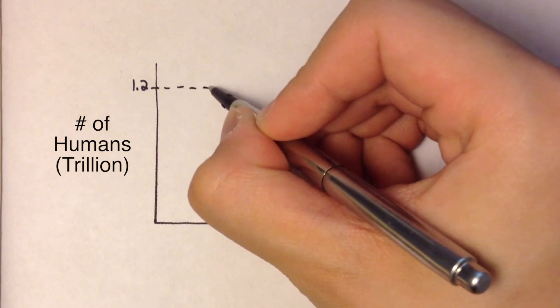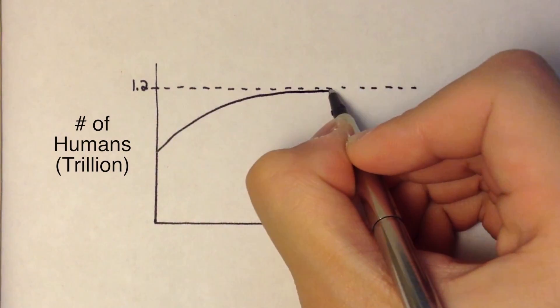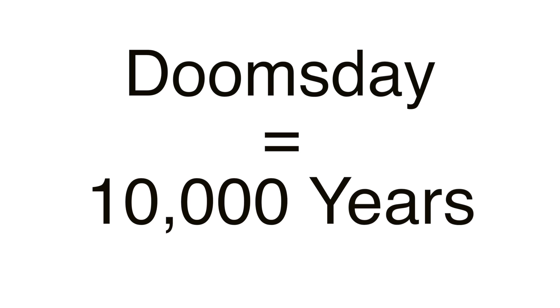Anyways, the main point is that 1.2 trillion humans is likely the maximum total number of humans that will ever exist. This is also saying that humanity will likely end in 10,000 years.